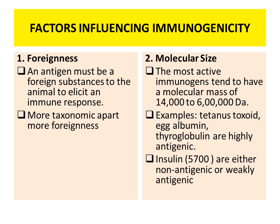The factors which are influencing the immunogenicity — number one is foreignness. The antigen must be a foreign substance to the animal to show the immune response. All those organisms which are more taxonomically apart are more foreign. For example, organisms which belong to mammals are foreign to organisms which belong to birds.